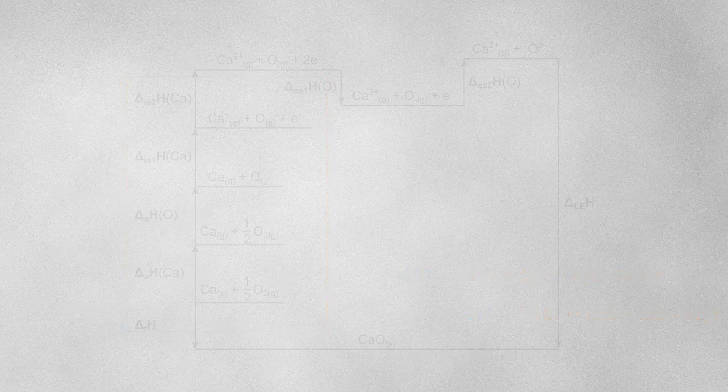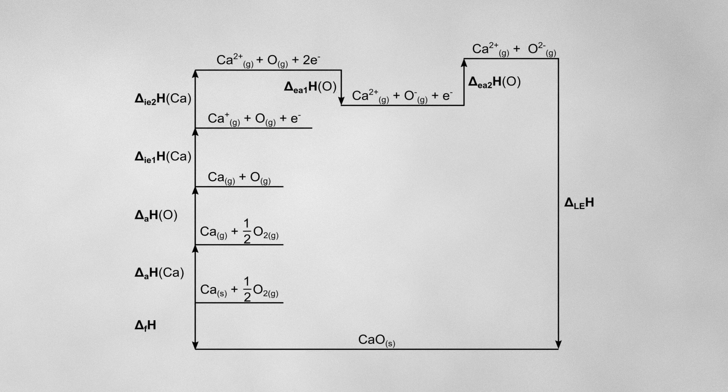Let me show you another example. This is the Born-Haber cycle for calcium oxide — it's set up in the same way as the sodium chloride one. Notice that there are two ionization energies for calcium, because it needs to lose two electrons when becoming Ca²⁺.